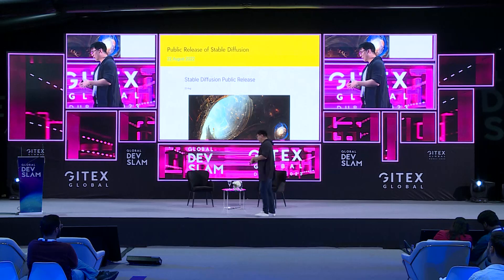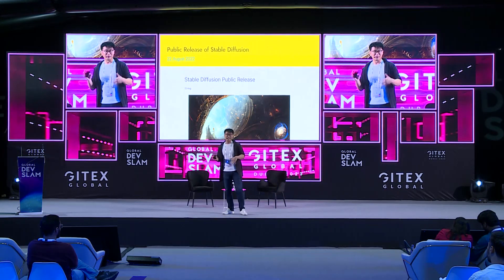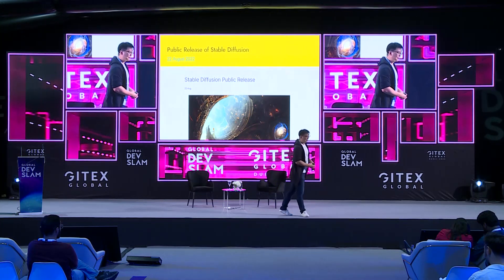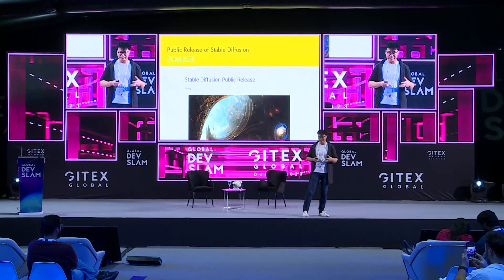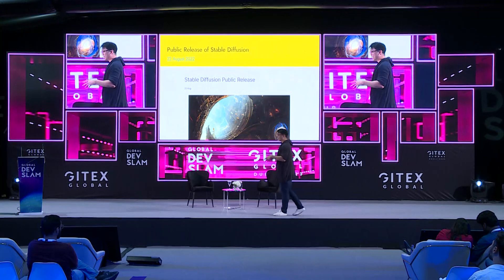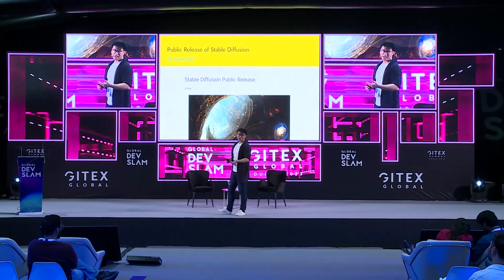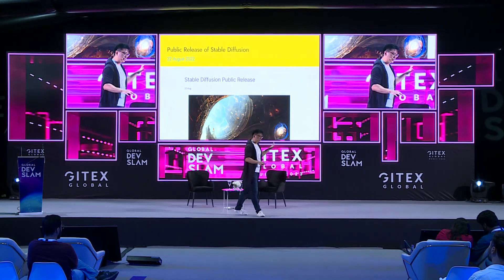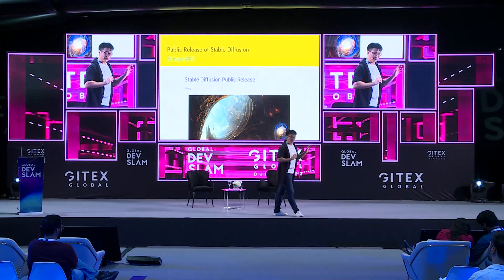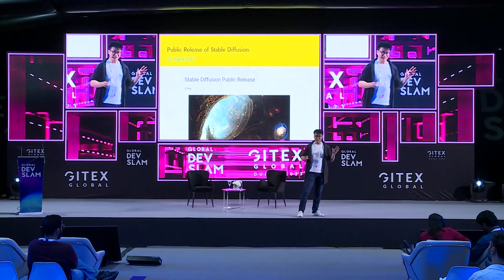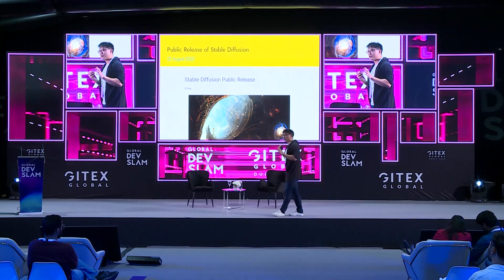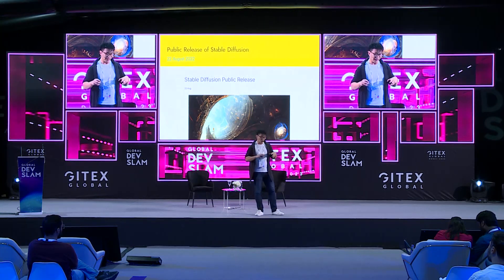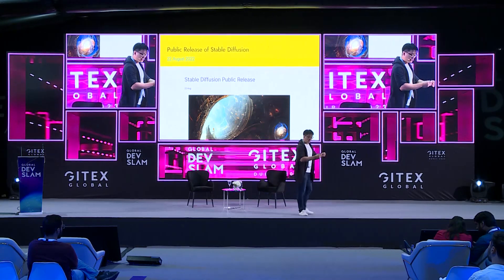Let's start with Stable Diffusion. Stability AI released this image model called Stable Diffusion late last year in August — slightly over a year ago — and it was the very first time there was a public release of a large latent diffusion model that could generate images as good as closed-source models like those used by Midjourney. Because the training script and model weights were totally publicly released, anyone can download it, run it on their laptop, fine-tune it on their own dataset, and create a whole new model. This really started the open source movement around image generation with latent diffusion models.